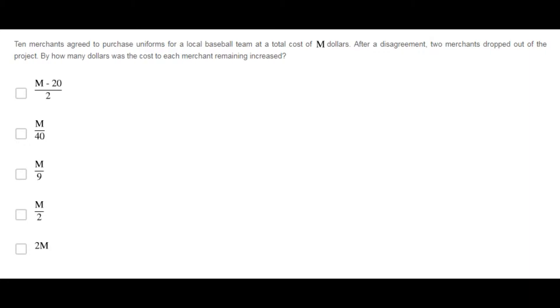At the beginning, ten Americans agreed to purchase uniforms at a total cost of M dollars. Therefore, they were supposed to pay M over 10 dollars each.